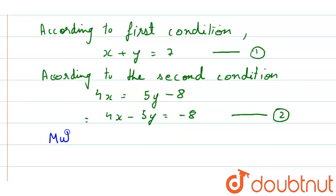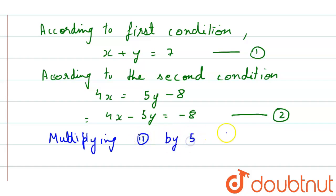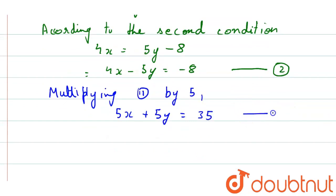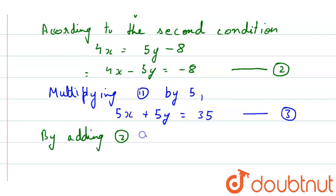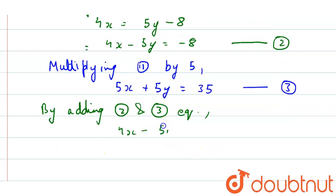Now, by multiplying equation 1 by 5, we get 5x plus 5y equals to 35. This is our third equation. By adding the second and third equations, we have 4x minus 5y equals to minus 8 and 5x plus 5y equals to 35.